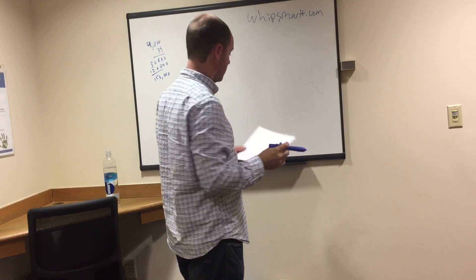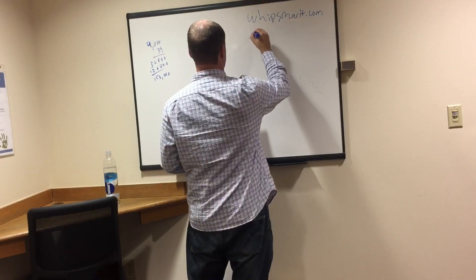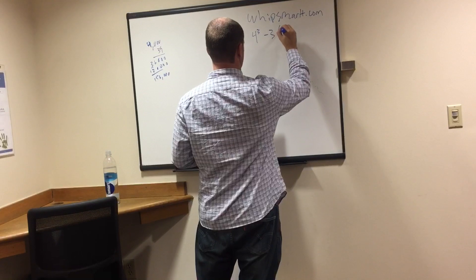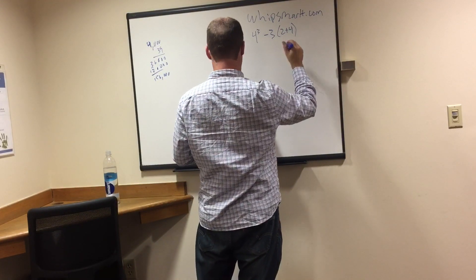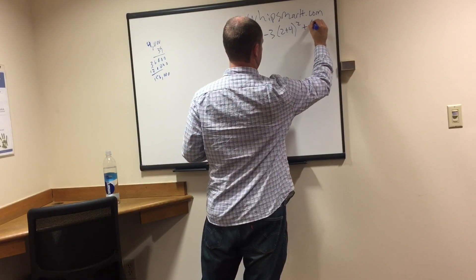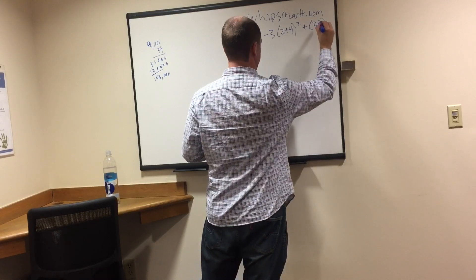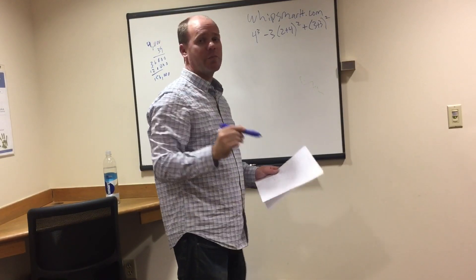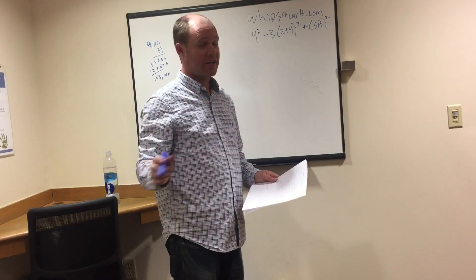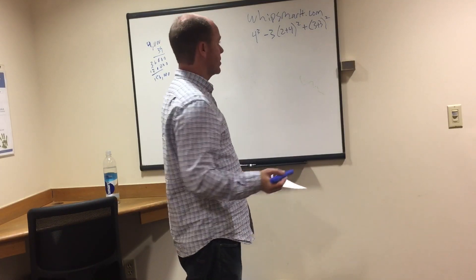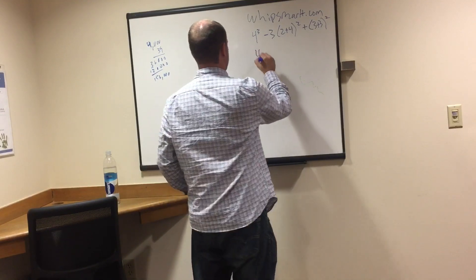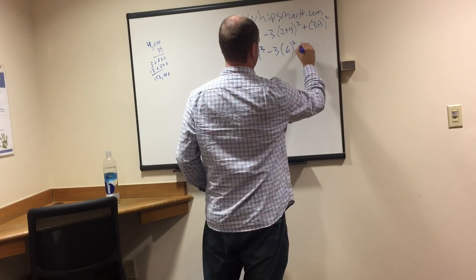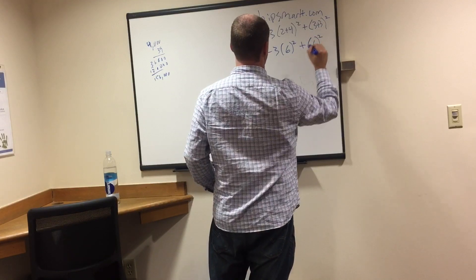Order of operations — almost for sure you're going to see at least one of these, probably a couple, on the ASVAB. We have: 4 to the third minus 3 times (2 plus 4) squared plus (3 plus 3) squared. The main thing we have to remember is PEMDAS. Parentheses first: 2 plus 4 is 6, and 3 plus 3 is also 6. So we get: 4 to the third minus 3 times 6 squared plus 6 squared.